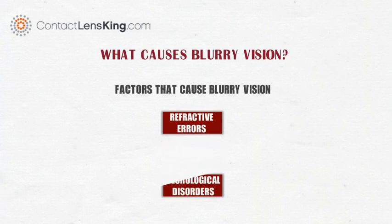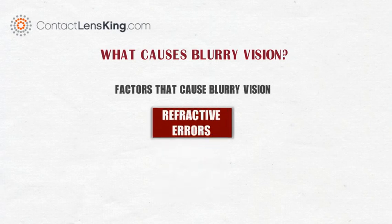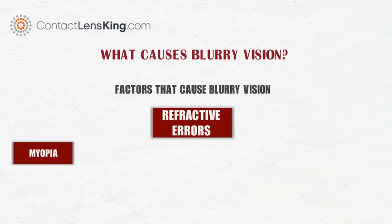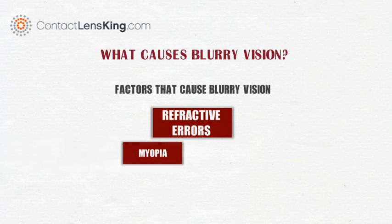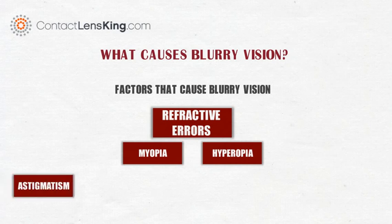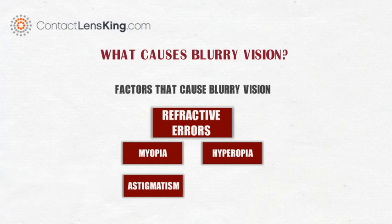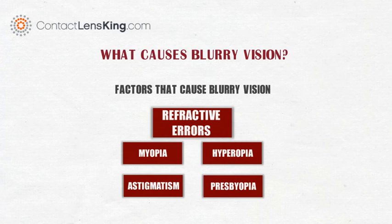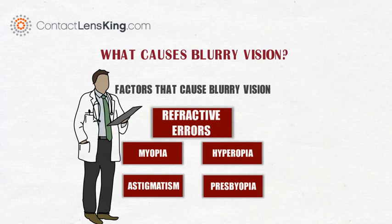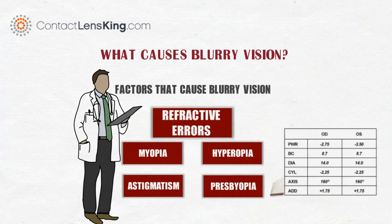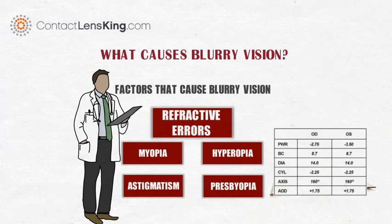The following causes are considered refractive errors: myopia or nearsightedness, hyperopia or farsightedness, astigmatism, and presbyopia. These disorders can usually be treated by consulting an eye care professional. Eyeglass or contact lens prescriptions can usually help resolve these types of blurry vision.